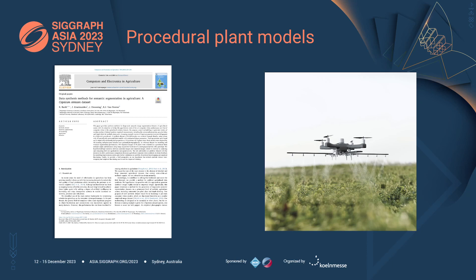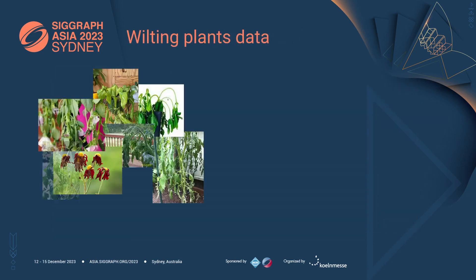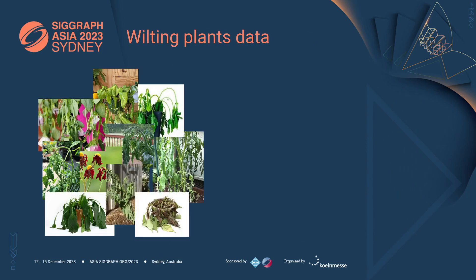However, at the current stage, we can only generate plants or we can at most simulate their growth, which is not suitable for important applications like early detection of plant sickness or general monitoring of plants. In this regard, we need data recording the status of a plant during its wilting process. So the question translates to, how we can obtain such data?